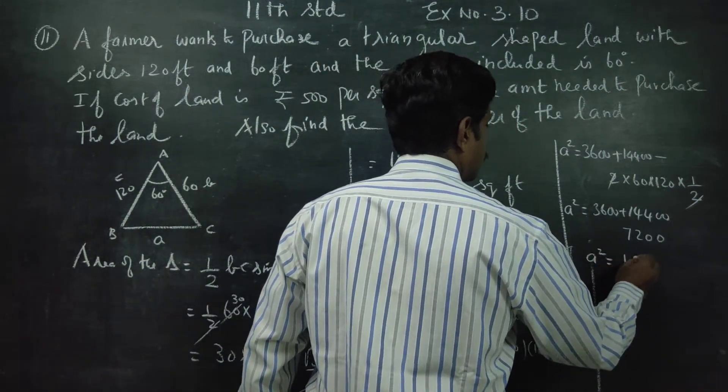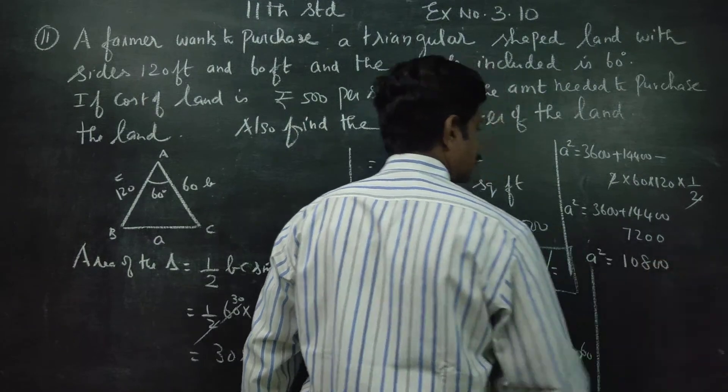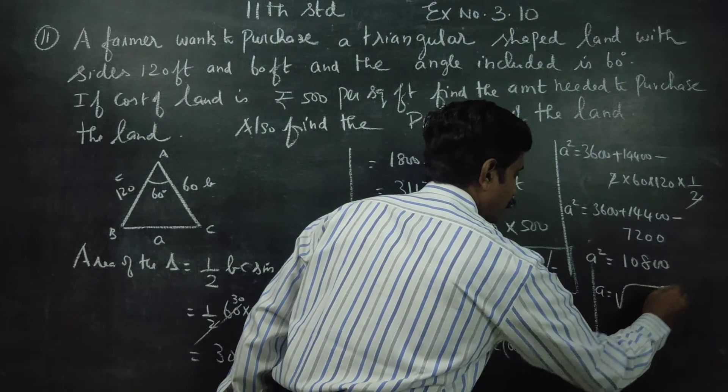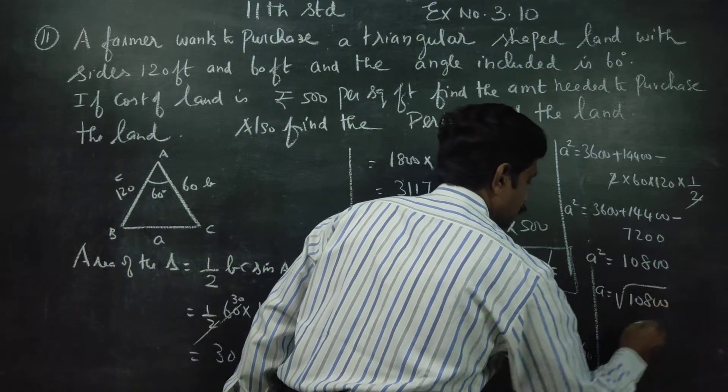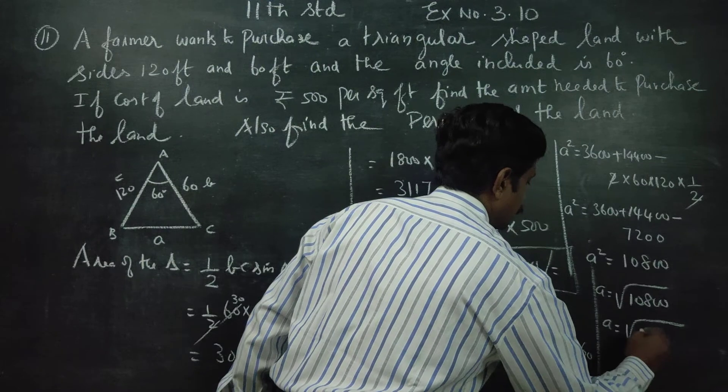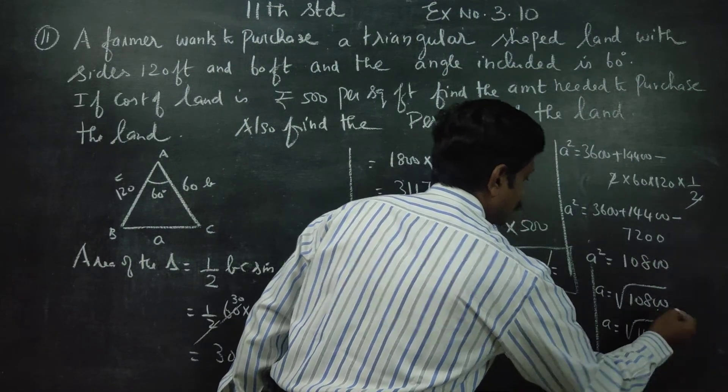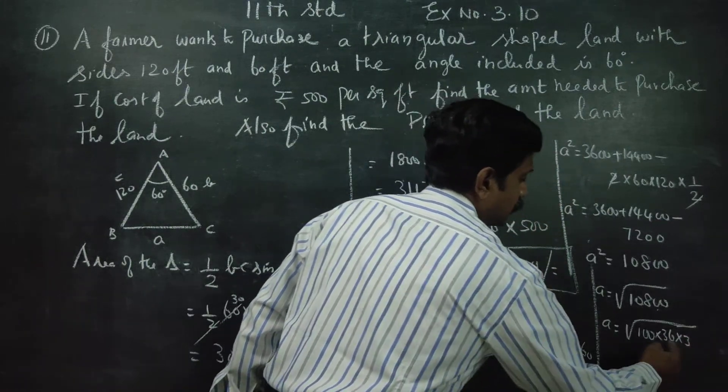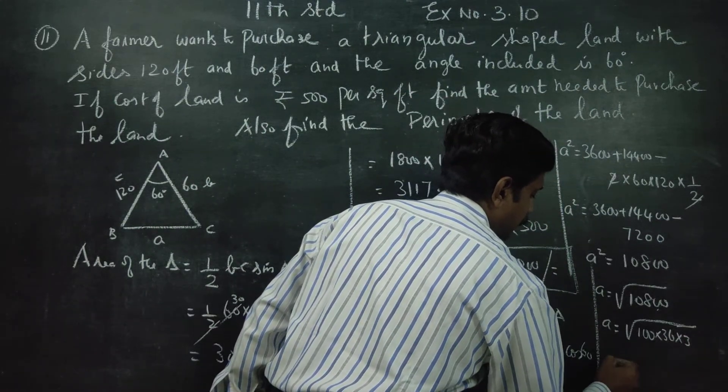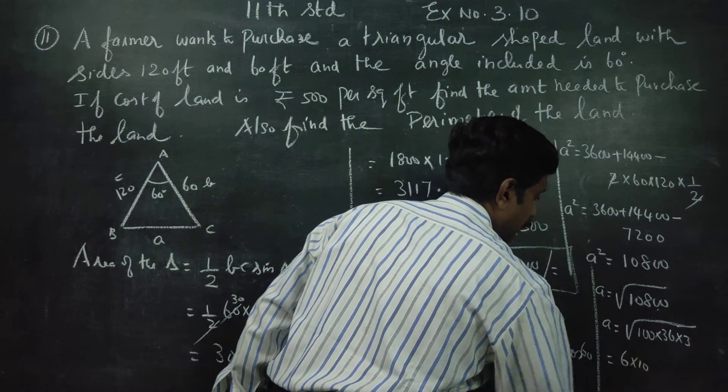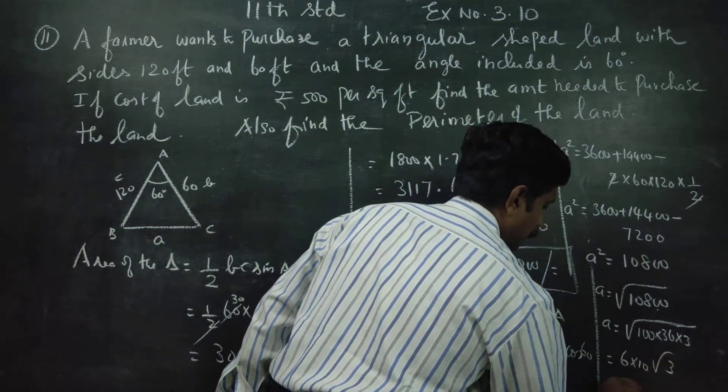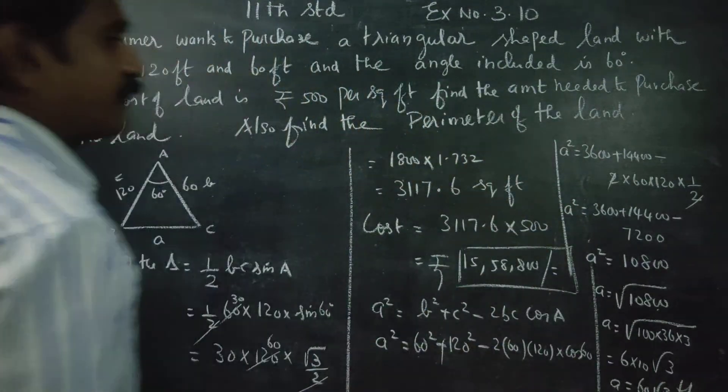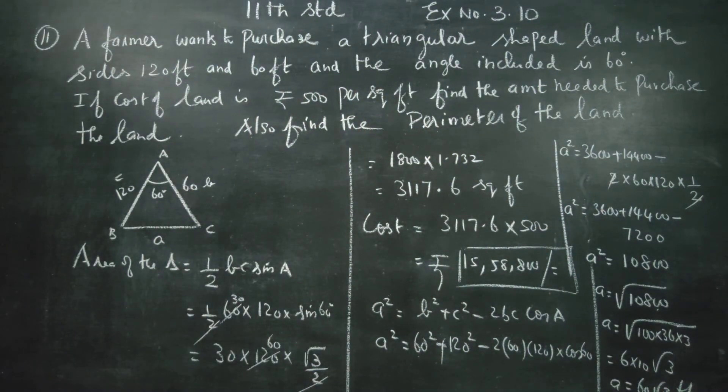a² is equal to 10800. So a is equal to root of 10800. That is 100 into 36 into 3. Taking square roots, a is equal to 60 root 3 feet. This is the value of a.